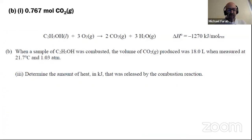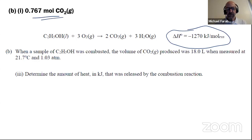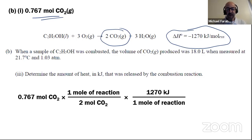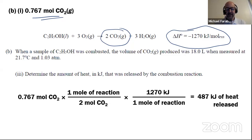On to the next part — part B, Roman numeral three: determine the amount of heat that is released. We've got to convert moles of carbon dioxide into kilojoules of heat. You could put 1270 on the top and two moles of carbon dioxide on the bottom. I've got 0.767 divided by two times 1270, so I get around 487 kilojoules of heat released. I don't need a minus sign here — just the amount of heat that was released.